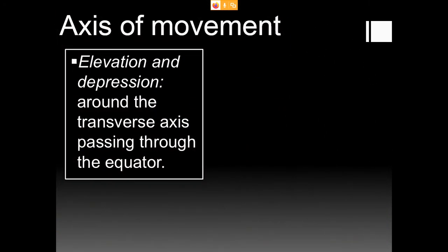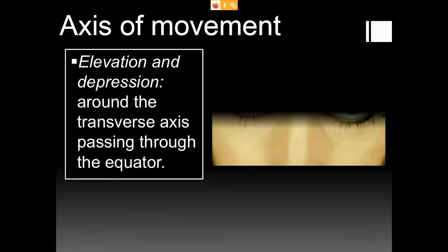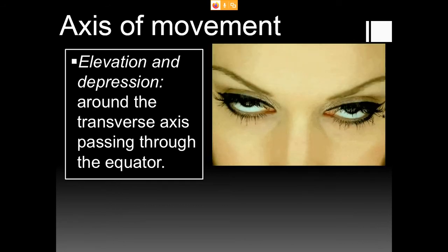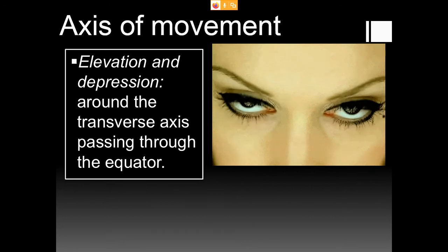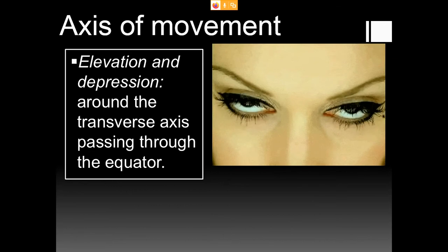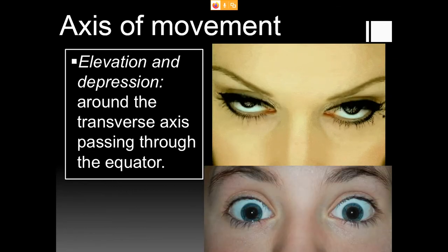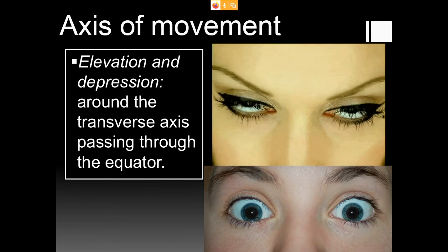The movements of the eyeball include elevation and depression around the transverse axis passing through the equator. Elevation means both eyeballs moving upward, and depression means both eyeballs moving downward.